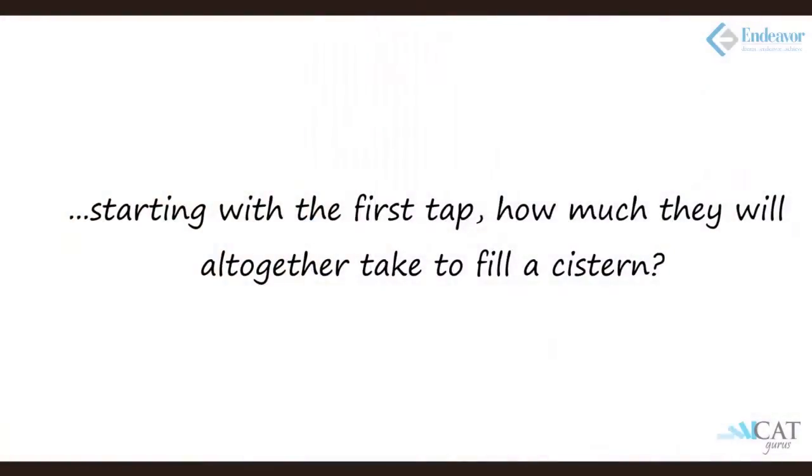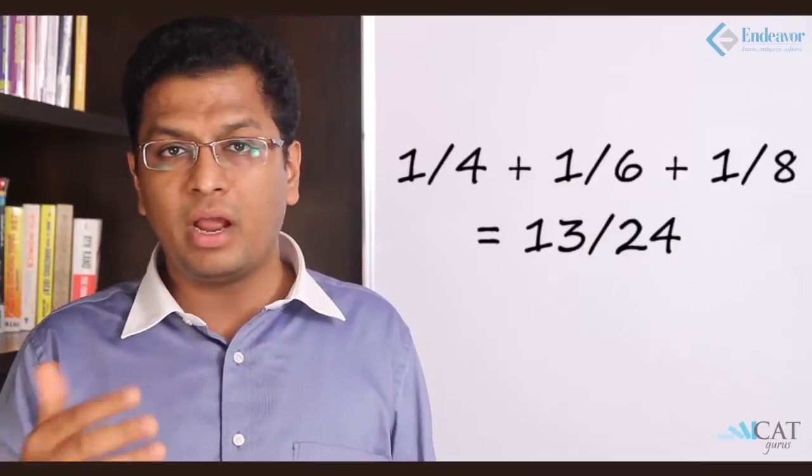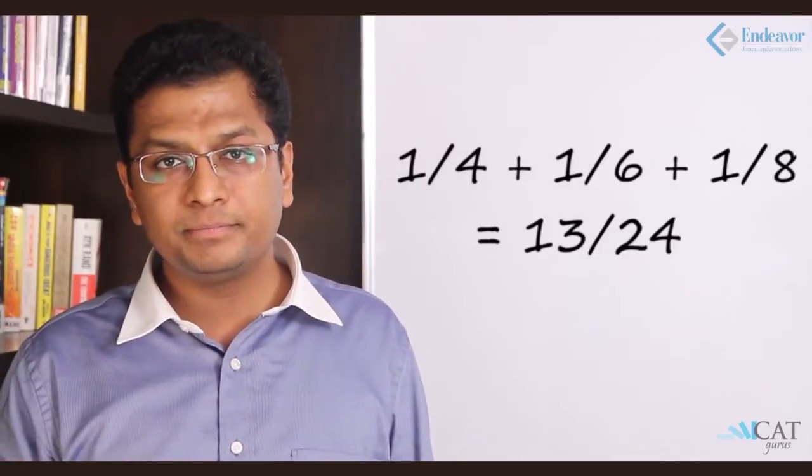Now get back to the question. Starting with the first tap, how much will they all together take to fill the cistern? The first one takes 4 hours to complete it, 6 hours, and 8 hours. So the work done in one hour is 1 by 4th, 1 by 6th, and 1 by 8th respectively. But they are not doing it simultaneously. We cannot simply add them up 1 by 4 plus 1 by 6 plus 1 by 8, which gives us 13 by 24. Ideally if they are opened it will be 24 upon 13. But still we can have an idea of how many cycles will be completed.